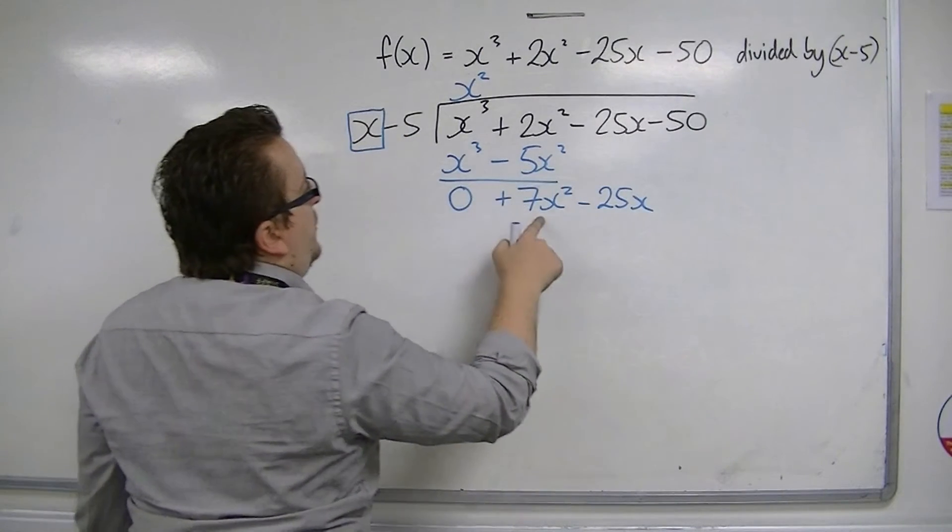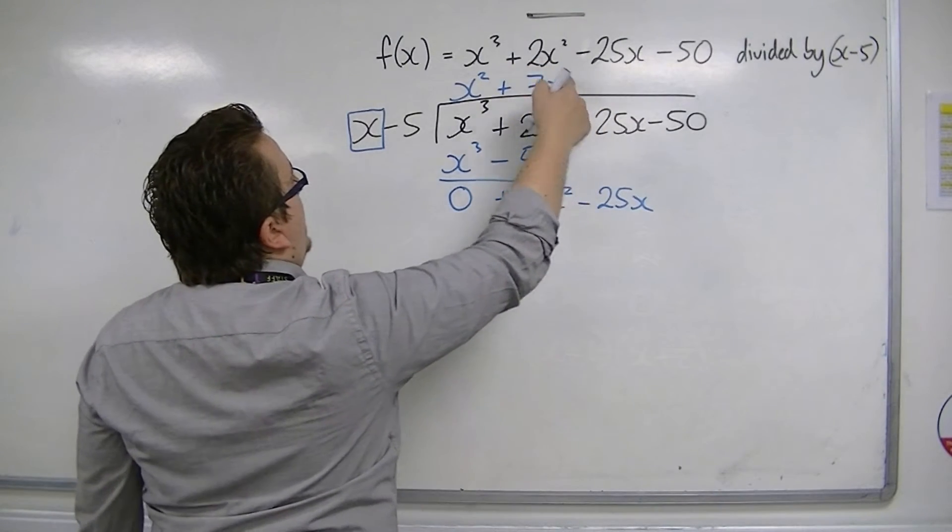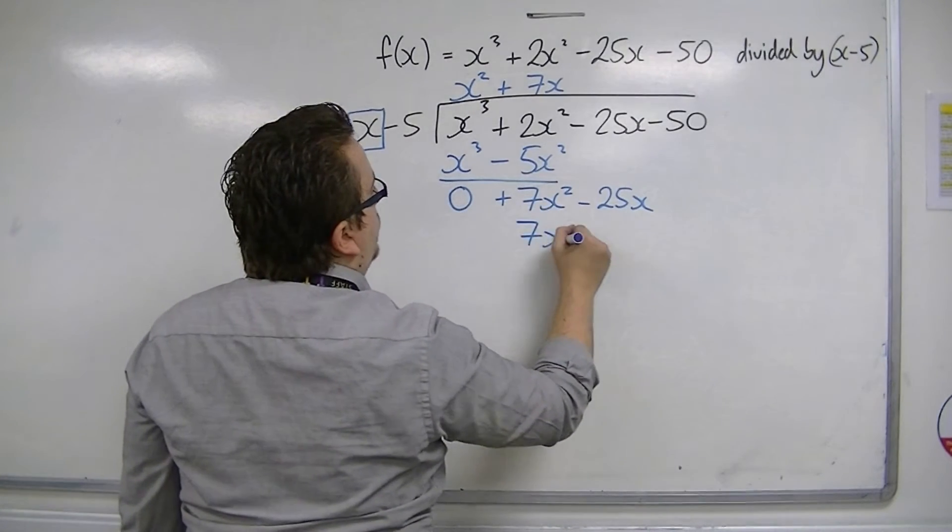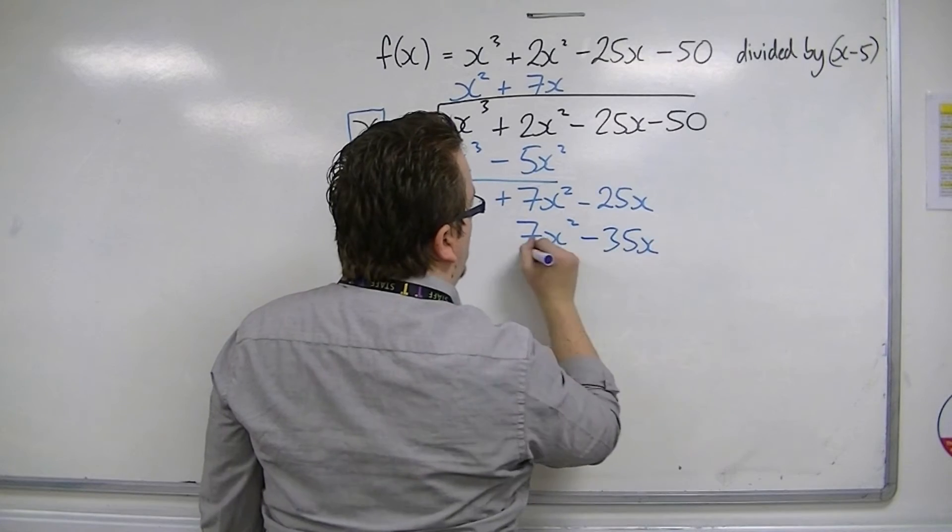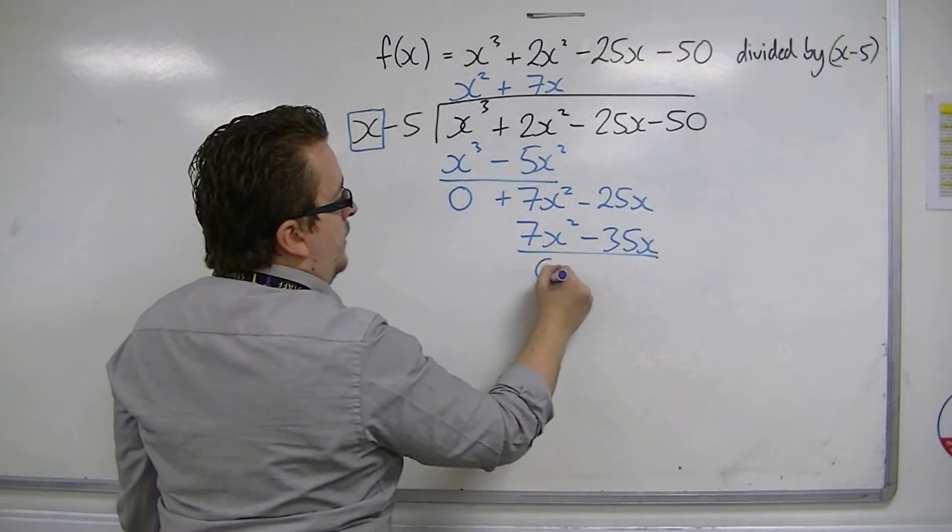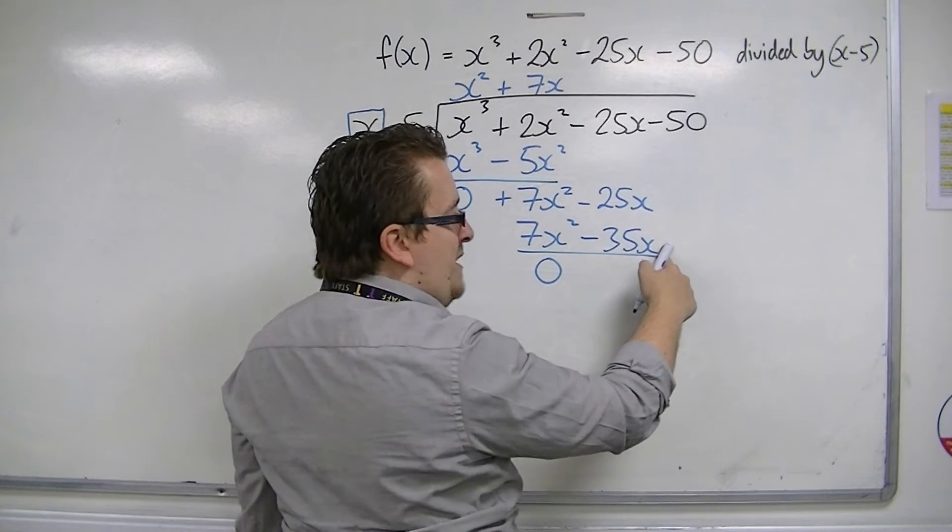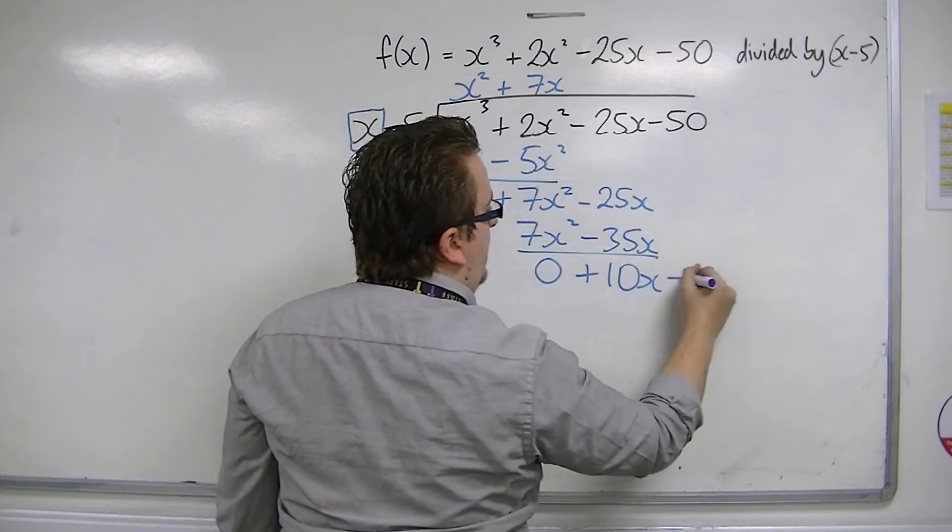Then x's into 7x squared goes 7x. Then 7x multiplied by both of these terms gets me 7x squared take away 35x. Draw a line, perform a subtraction. 0, 0, minus 25x take away minus 35x is plus 10x. Bring the next term down.